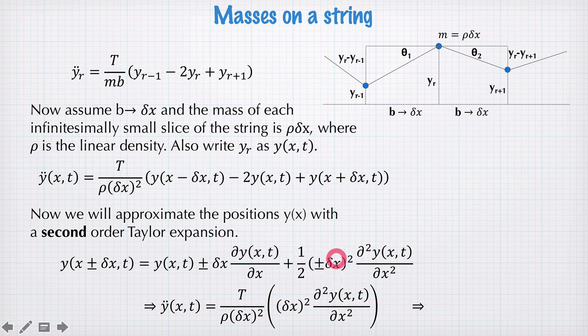But the δx squared means that the second spatial derivative does not cancel. And so when you substitute those Taylor expansions into this and cancel everything out, what we get is this equation here where we have δx squared on the bottom from this factor out the front, which will cancel this δx squared.